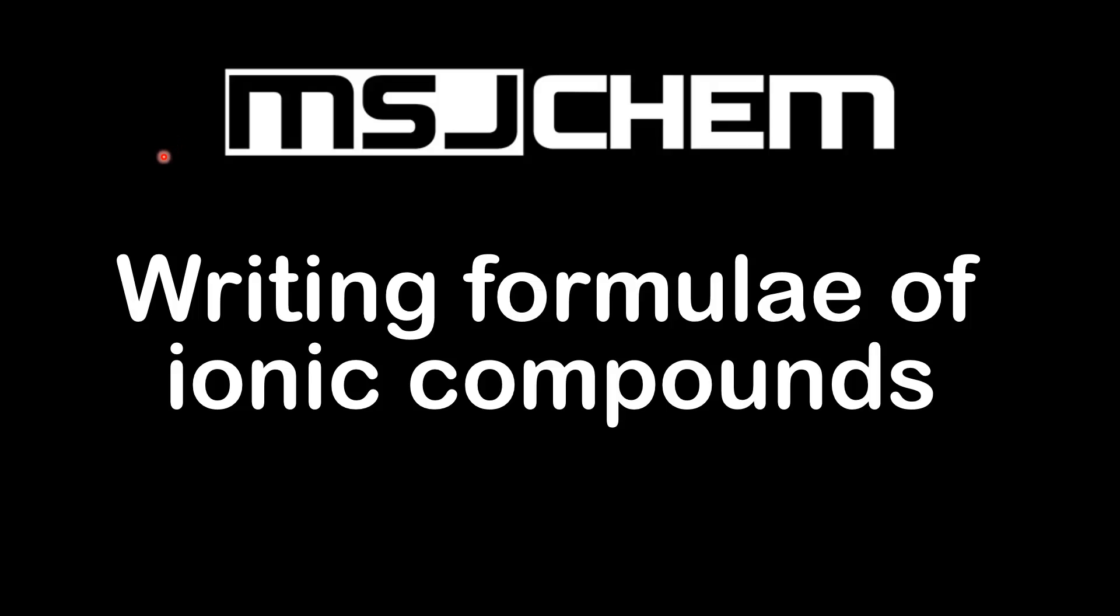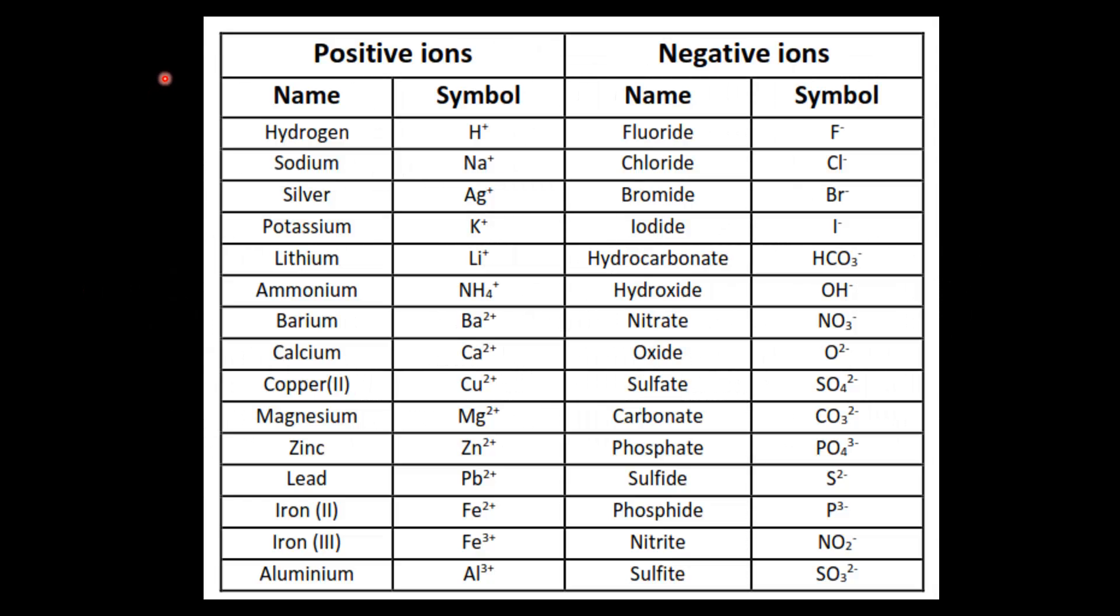This is MSJChem and in this video I'm going to be looking at writing formulae of ionic compounds. Here's the ion chart from my previous video. It has a list of all the positive and negative ions that you're likely to come across in IB chemistry.